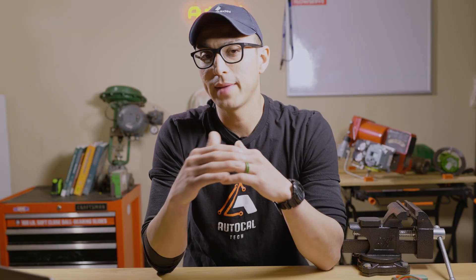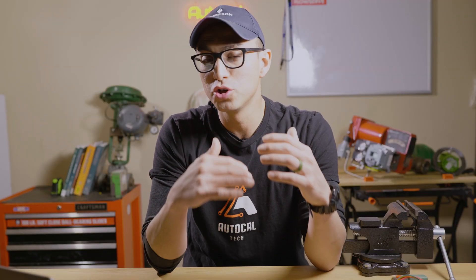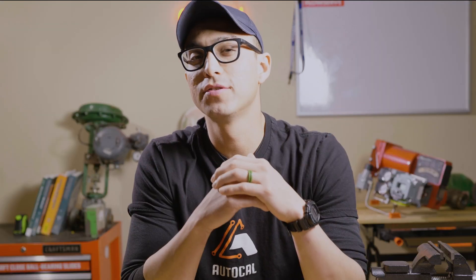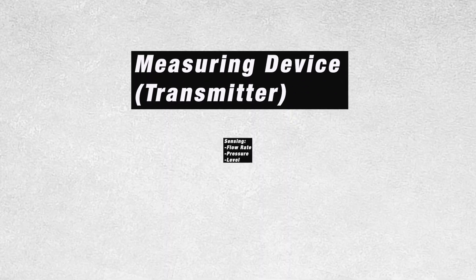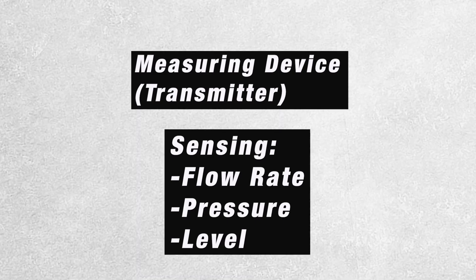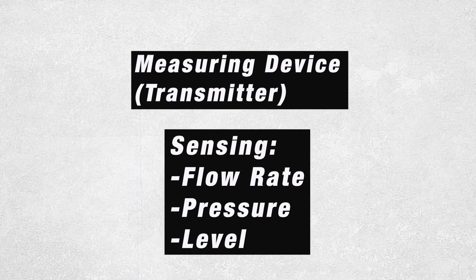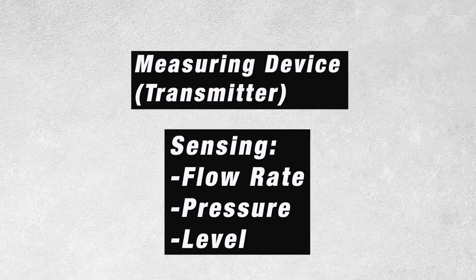Control valves can work automatically, but the question you should be asking is: how does it work automatically? How does it know when to close or open, and what does it communicate with? To answer that, let's look at a quick cycle. The first step is the measuring device or transmitter, which does the sensing — whether it's sensing flow rate, pressure, or level — and that's where the cycle begins.